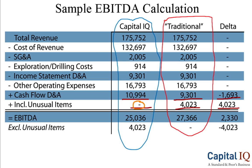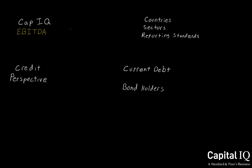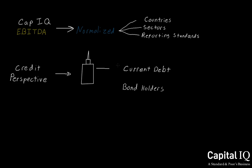The net result in this case is an approximately $2 billion delta, which is a material difference when valuing a company either on a standalone or relative basis. As we've discussed, Capital IQ's EBITDA is a highly normalized measure that enables meaningful analysis across countries, sectors, and reporting standards. From a credit perspective, the standardized nature of EBITDA provides a clean metric with which to measure both a company's ability to service its current debt as well as pay back bondholders upon maturity.